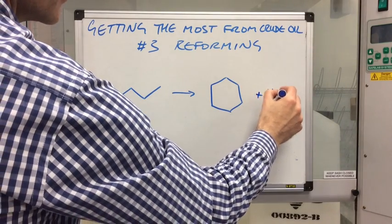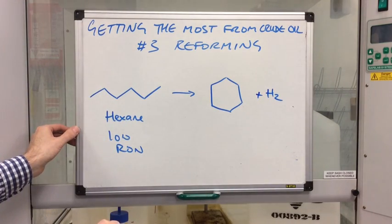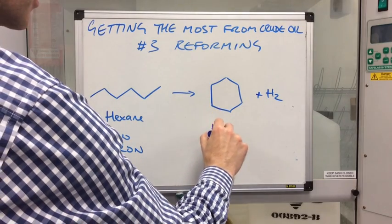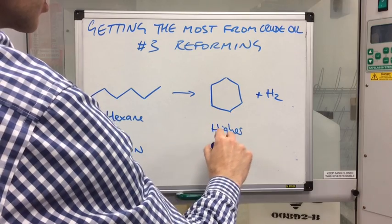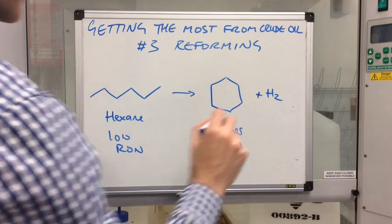So to balance that, we also need an H2 molecule in that equation. So this is cyclohexane and this has got a higher RON value. It's going to combust more efficiently.